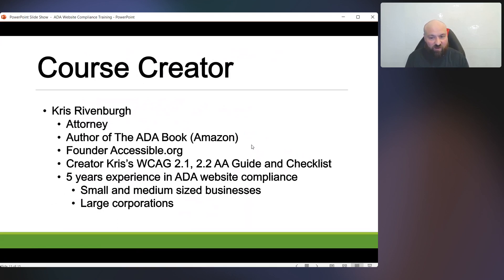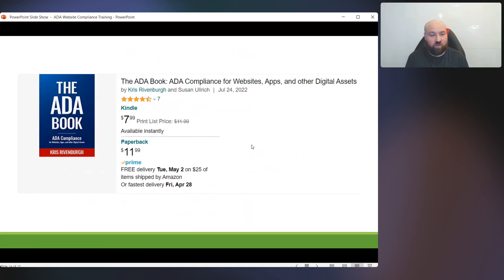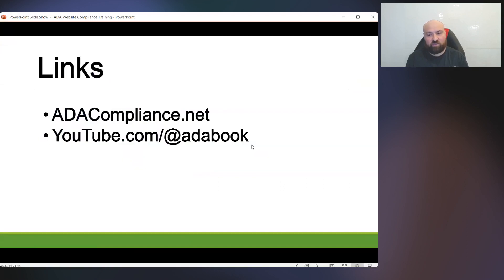Who created this course? It's myself — my name is Chris Rivenberg. I am an attorney. I am the author of the ADA book, which you can find on Amazon. I'm the founder of accessible.org, where I offer accessibility services including audits and remediation. I am the creator of my own WCAG 2.1 and 2.2 guides and checklists, which you can find on accessible.org. I have five years of experience in ADA website compliance, working with all sorts of clients including small and medium-sized businesses and large corporations. On the next slide, there's a screenshot of the Amazon listing — the book is titled 'ADA Compliance for Websites, Apps, and Other Digital Assets,' and currently has a 4.3-star average rating.